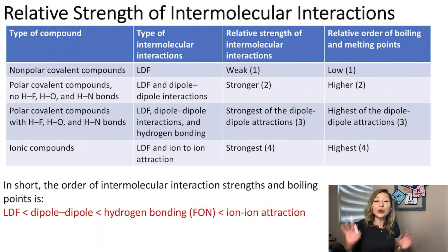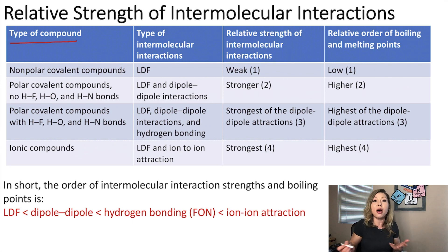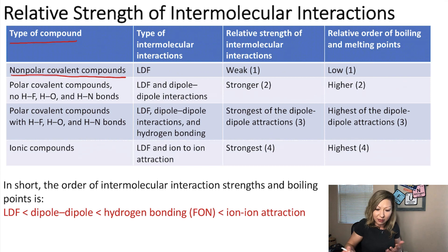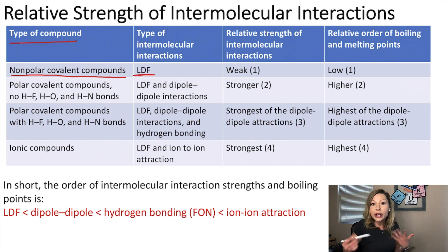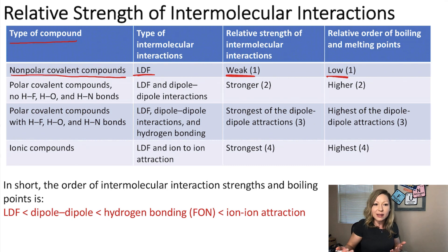Hello guys, let's talk about the relative strengths of intermolecular interactions. We have a handy table with different types of compounds. Starting with non-polar covalent compounds — the only type of interaction in these compounds is London dispersion forces, which causes relatively weak intermolecular interactions and low boiling and melting points.